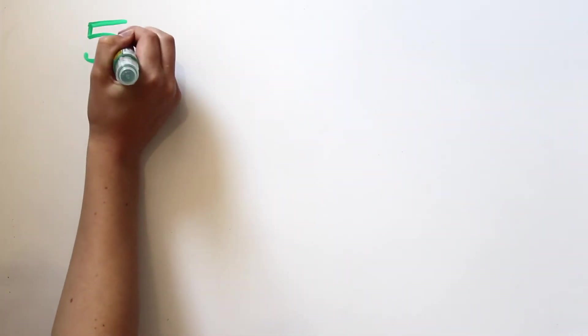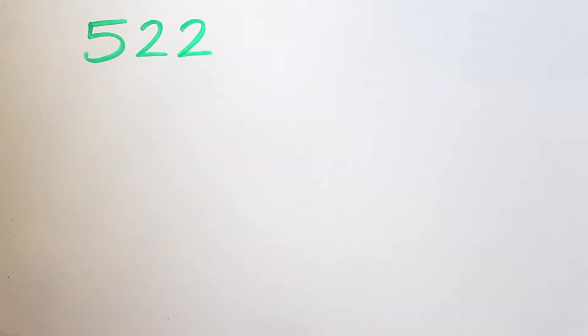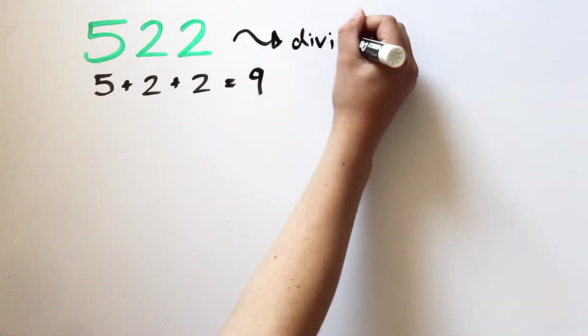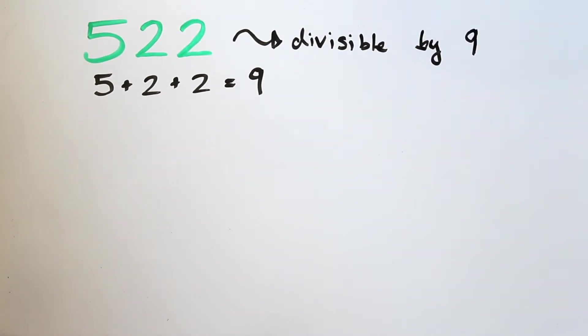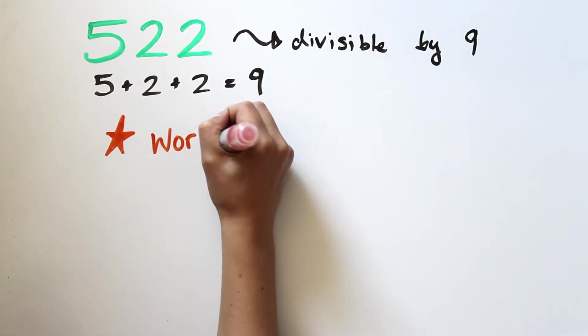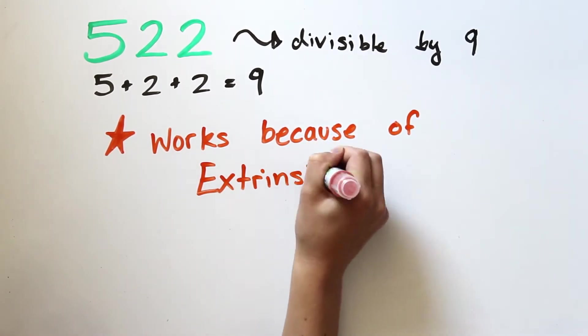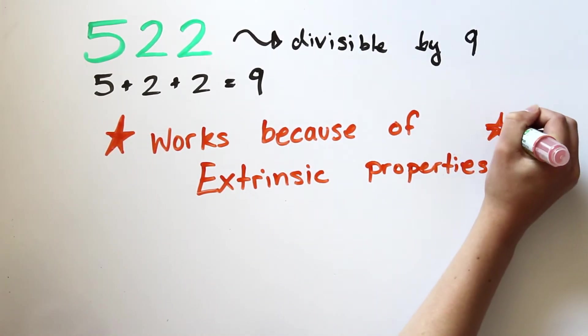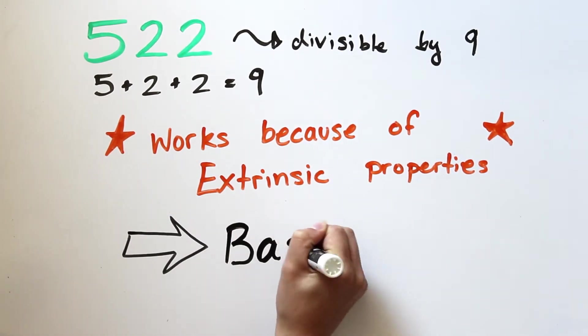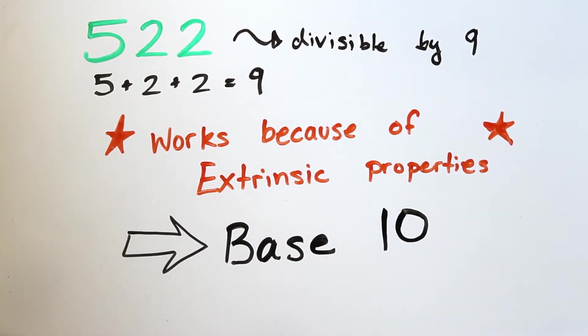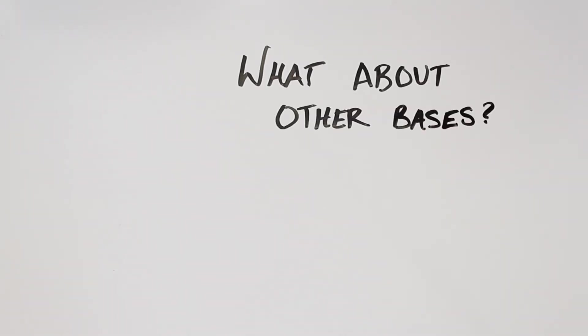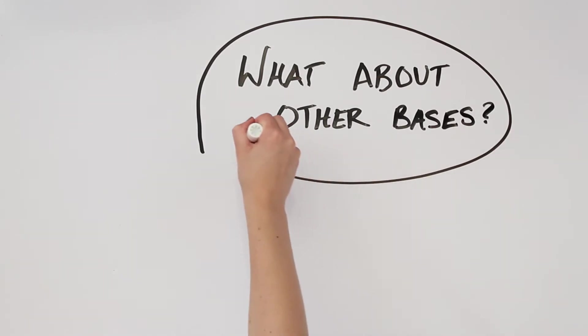If I write 522, we check to see if it's divisible by 9 using the digits, the representation, the name of the number. But the only reason we represent 522 in this way is because we are using base 10. This is what we call an extrinsic property of a number. So the 9's trick must work because of the relationship between 9 and 10. Namely, 9 is 1 less than 10. If the 9's trick works because of the number system that we are using, it's natural to ask about divisibility tricks with other number systems.